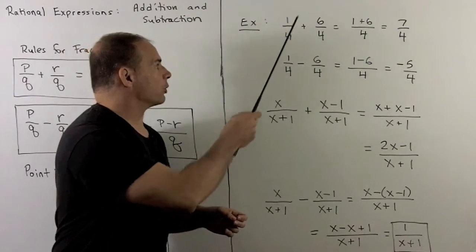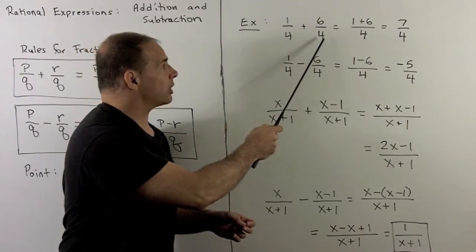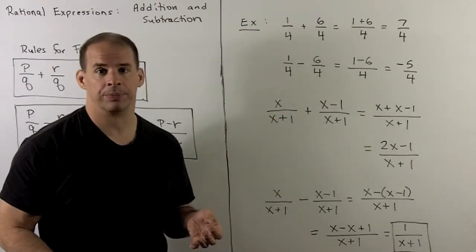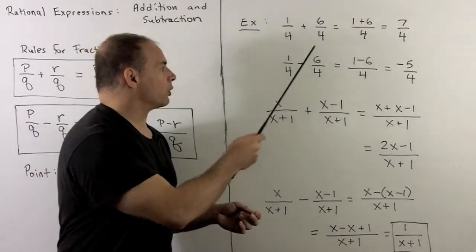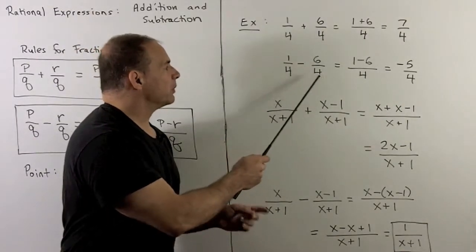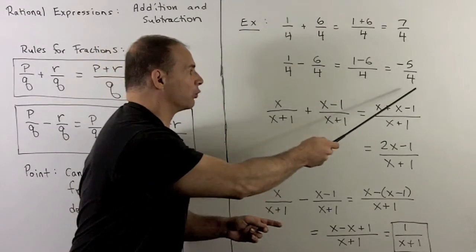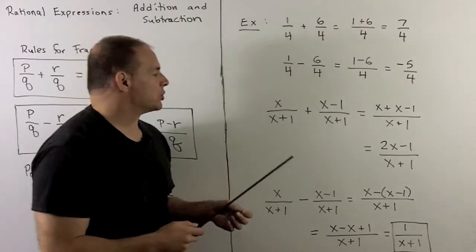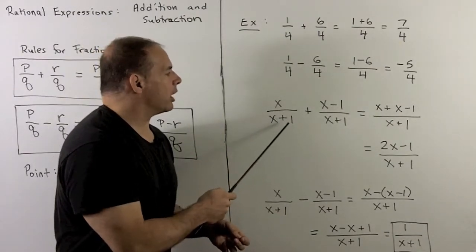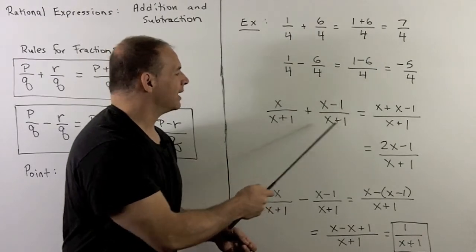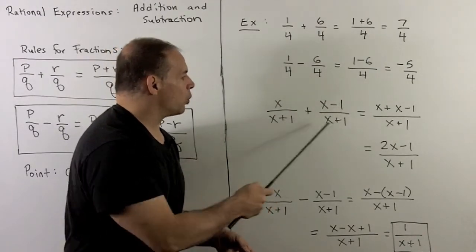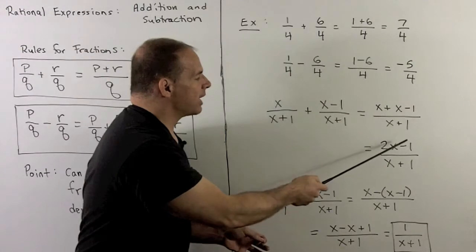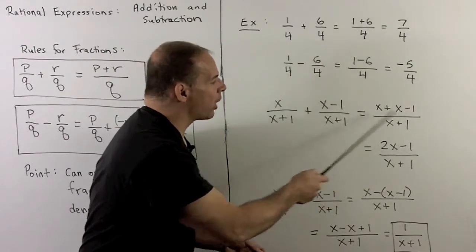Let's apply these rules to a few examples with regular fractions. If I take 1/4 plus 6/4, the 4s match in the denominator, so we can combine to get 1 plus 6 over 4, or 7/4. For the difference, 1/4 minus 6/4, the 4s match, so we take the difference in the numerator to get minus 5 over 4. With rational expressions, same idea: X over X+1 plus X minus 1 over X+1 — the denominators both match as X+1, so the numerator becomes X plus X minus 1, or 2X minus 1, over X+1.